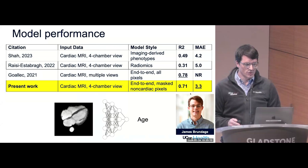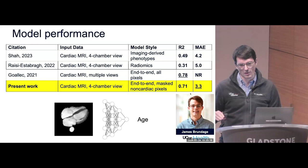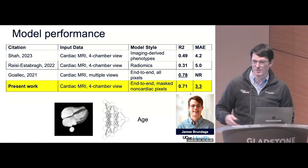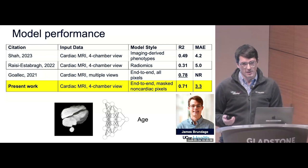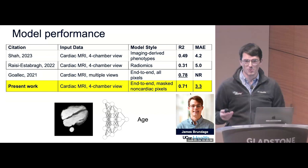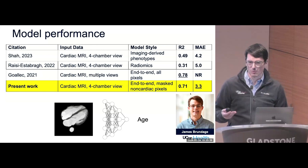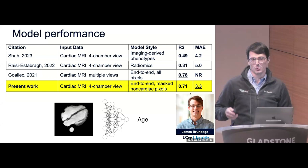Comparing against the three prior papers, one metric is R-squared — the percent of variance in age explained by the model. We do better than using measurements or radiomics alone, but don't do as well as using all the information in the videos including non-cardiac structures. It's not surprising that we miss some information by stripping those out, but we hope to make it up by being able to interpret what we're extracting.